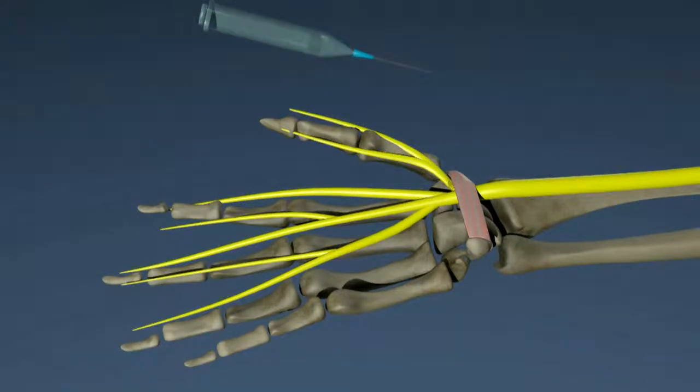If non-surgical treatments fail, a carpal tunnel release may be suggested. A carpal tunnel release is a simple surgical procedure in which the transverse carpal ligament is cut, relieving pressure from the median nerve.